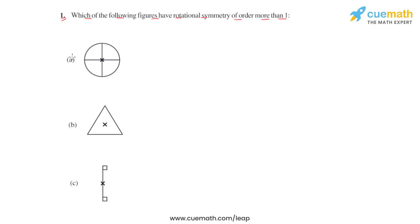Let us consider figure A and rotate it about its fixed point, which is the center of rotation. We'll mark this point using a blue dot to track the rotation, then rotate the figure in the clockwise direction by an angle of 90 degrees.